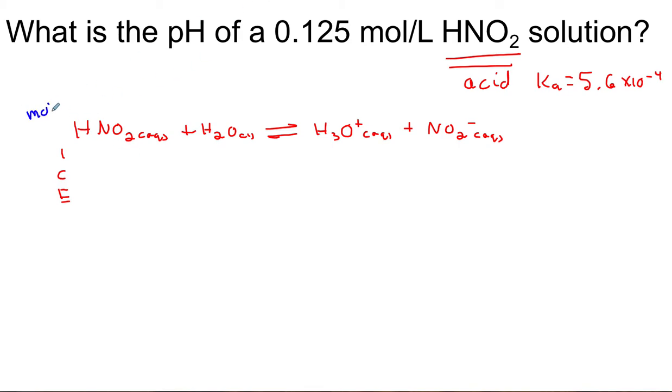Instead of writing the units throughout my ice table, I will make sure I put in mol per liter concentrations throughout. Our initial concentration of our acid is 0.125 mol per liter.